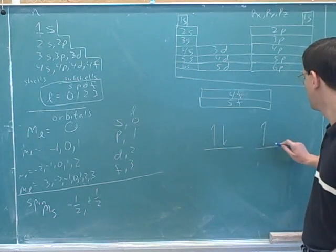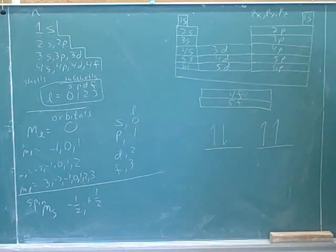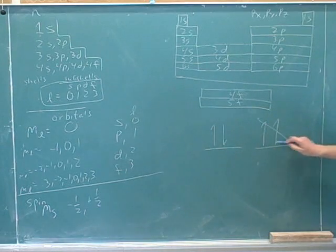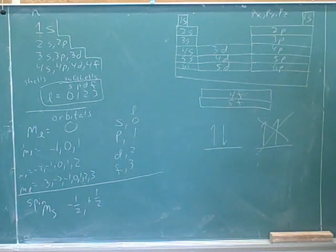That's why you should never draw this, because this would violate the Pauli exclusion principle. This would be two electrons in the same shell, subshell, and orbital, and with the same spin. So that violates the Pauli exclusion principle.